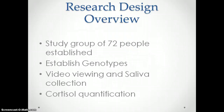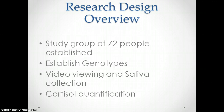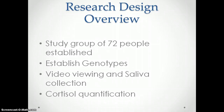For my project, I had a study group of 72 people, recruited from my dad's five class periods. I had to establish their genotypes — whether they had GG, AA, or GA — and then I put them under a stressor, which was a video, collected their saliva, and tested it for cortisol levels.